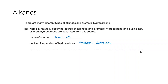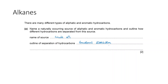You heat up the crude oil and the vapors condense on different trays depending on how high or low the boiling points of these fractions are. This is fractional distillation. When alkanes are heated to high temperatures in the absence of air, the molecules can break into smaller molecules — this reaction is known as cracking. There are two types: thermal cracking and catalytic cracking.